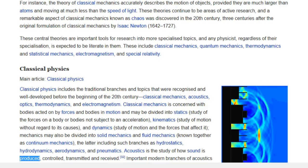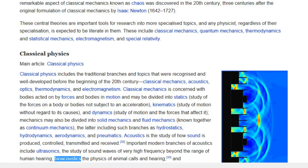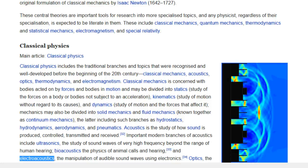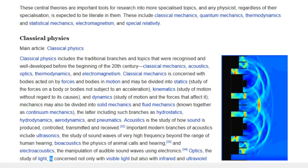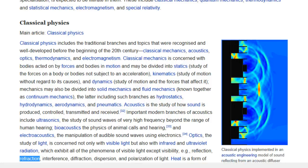Acoustics is the study of how sound is produced, controlled, transmitted, and received. Important modern branches of acoustics include ultrasonics, the study of sound waves of very high frequency beyond the range of human hearing; bioacoustics, the physics of animal calls and hearing; and electroacoustics, the manipulation of audible sound waves using electronics. Optics, the study of light, is concerned not only with visible light but also with infrared and ultraviolet radiation, which exhibit all of the phenomena of visible light except visibility, e.g., reflection, refraction, interference, diffraction, dispersion, and polarization of light.